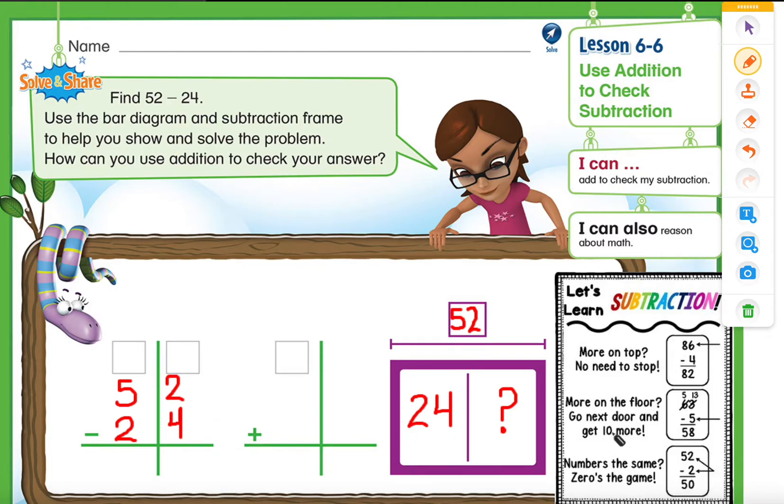Let's take a look. More on top, no need to stop. More on the floor, you go next door and get 10 more. Numbers the same, zero's the game.